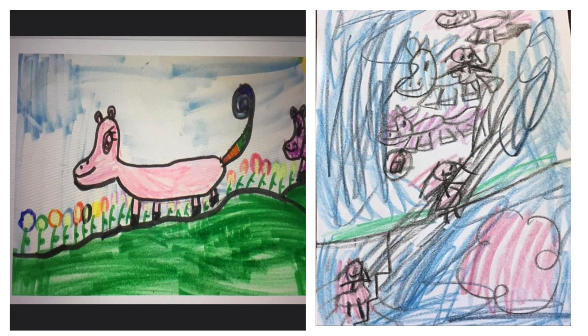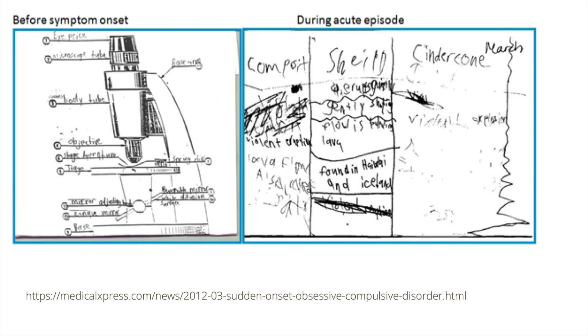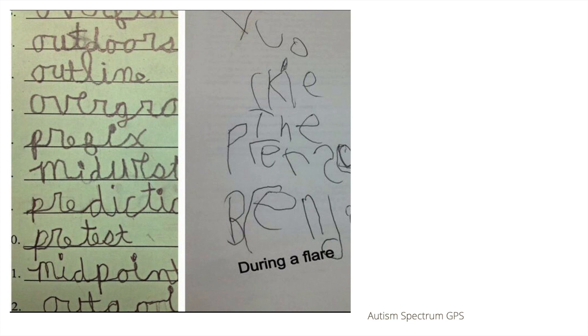Here is an example — this is my daughter doing a narrative writing in second grade. One day she was able to do the picture on the left, and then literally the next day, during a big flare, this is the picture on the right. You can see the difference between what she's capable of doing when not in a flare versus during a flare. Here's another example of writing showing the inability to organize, focus, and the legibility of handwriting. And another example: the one on the left was before symptoms occurred, and on the right is during an acute flare. Here's another example of spelling — the one on the left is a regular day, and the one on the right is during a flare.